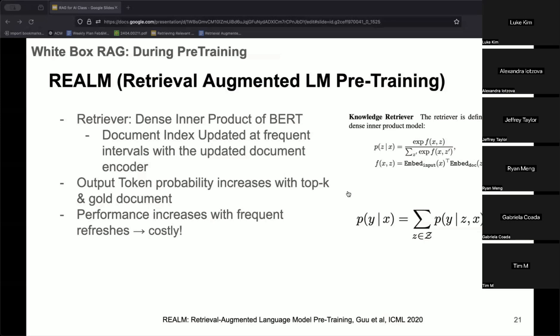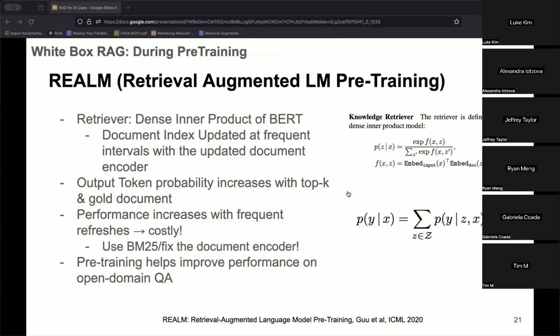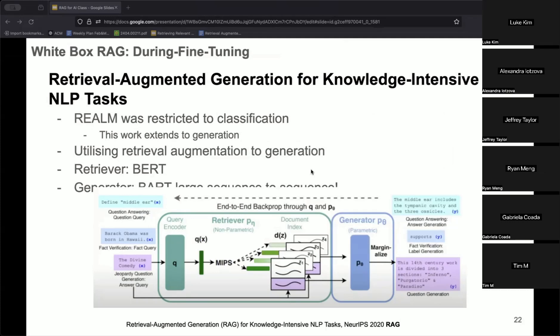Frequent index refreshes are very costly, especially with larger index sizes of the order of 10,000 or with document encoders beyond 100 million parameters. Some other works use BM25 or freeze the document encoder and just back-propagate through the query encoder. Pre-training with retrieval also helps improve performance on open-domain QA. Feel free to ask any questions if you want me to delve into more detail on the basics.